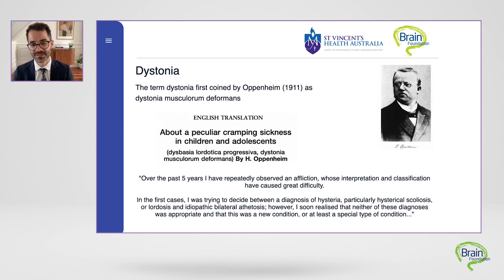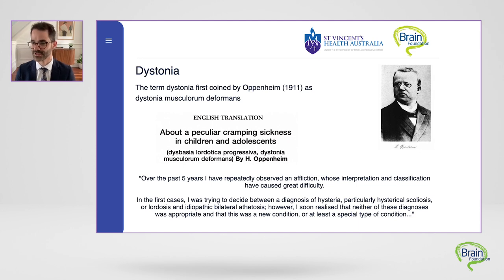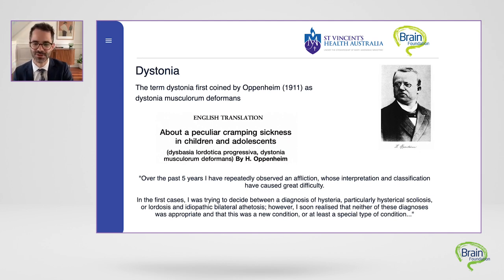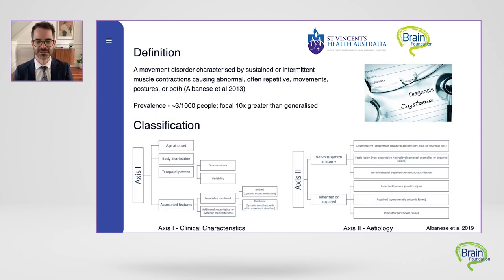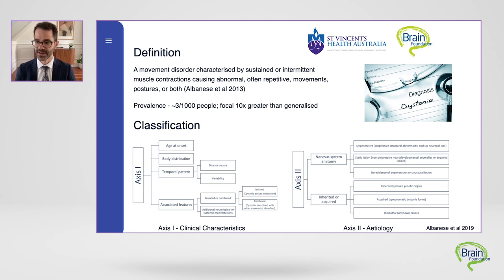Interestingly, it wasn't always this way. Whilst dystonia has likely existed as long as the human brain has, the term was first coined in 1911 by German neurologist and psychiatrist Dr. Heinrich Oppenheim, who described a condition in four children that he termed dystonia muscularum deformans in his paper about a peculiar cramping sickness in children and adolescents. Whilst our definition has certainly evolved, many of those astute observations that Dr. Oppenheim made in 1911 remain true to this day.